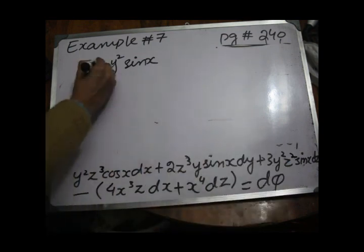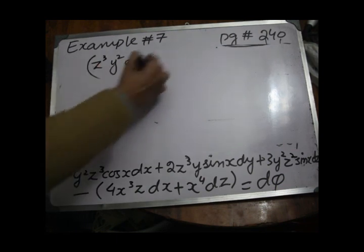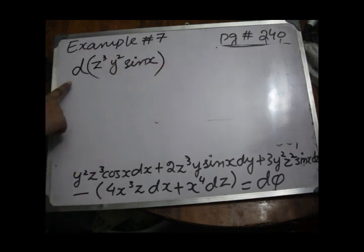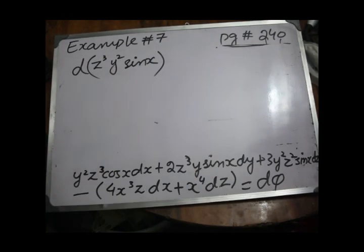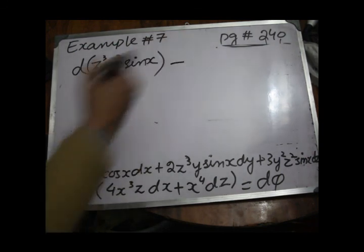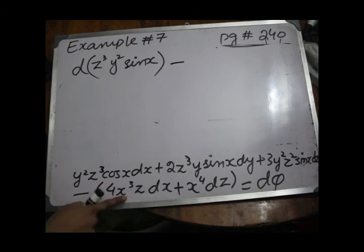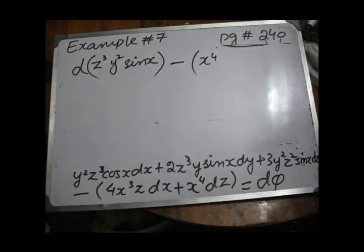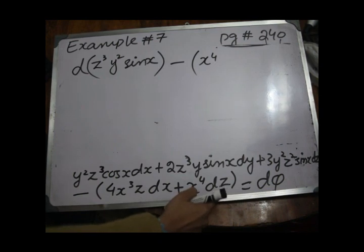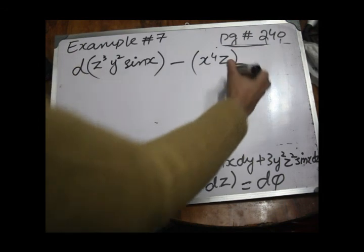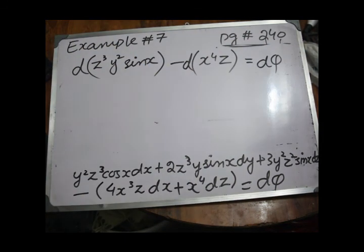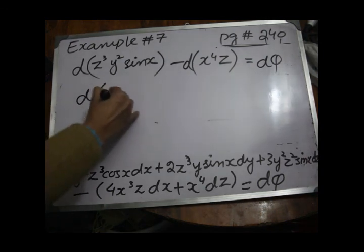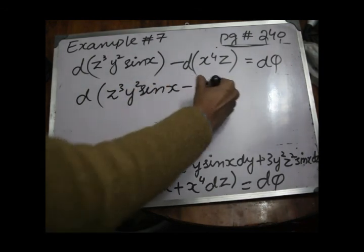So the first group is the differential of y² z³ sin x. For the second group, 4x³z dx plus x⁴ dz: differentiating x⁴z with respect to x gives 4x³z, and with respect to z gives x⁴. So the second group is the differential of x⁴z. Combining: d(y² z³ sin x) minus d(x⁴z) equals d(y² z³ sin x minus x⁴z) equals d-phi.